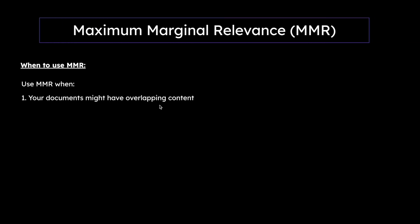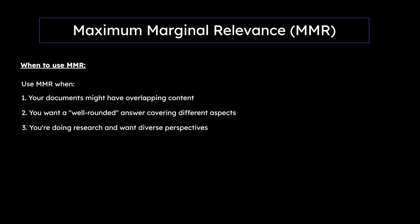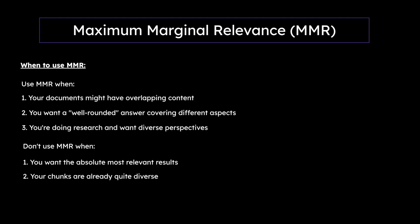Sometimes we might want pure relevant chunks; sometimes we might want a mix of relevant as well as diverse chunks. We can use MMR when our documents might have overlapping content, when we want a well-rounded answer covering different aspects, and when we're doing research and want diverse perspectives. We don't want to use MMR when we want the absolute most relevant results, when chunks are already quite diverse, or when speed is critical because MMR can be a little slow.